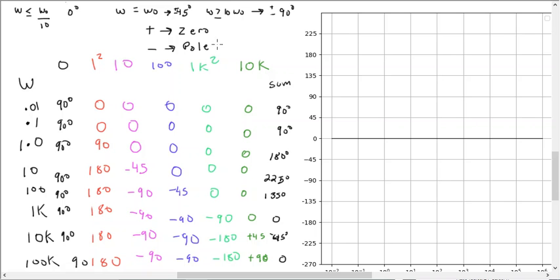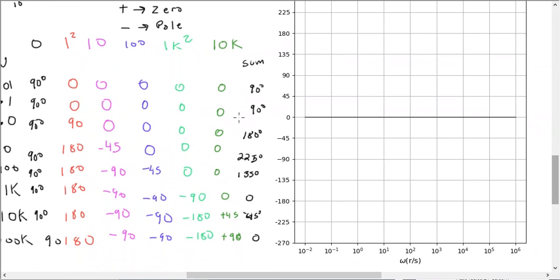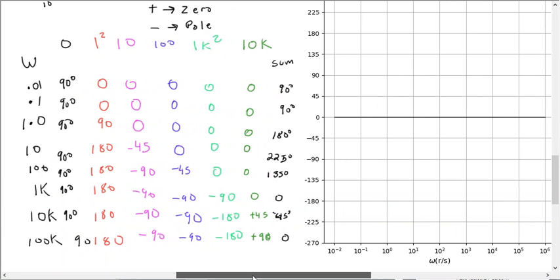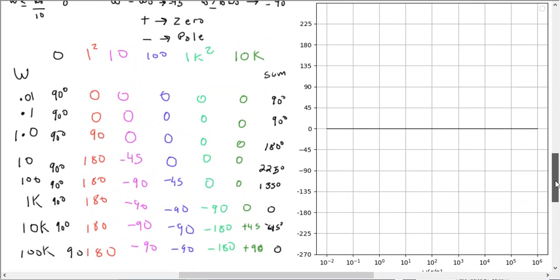Again, plus if it's a zero, minus if it's a pole. And for a complicated Bode plot like this one, where the poles and zeros are a minimum of or maximum of one decade apart, things start to run into each other. So you have to kind of use this table method.